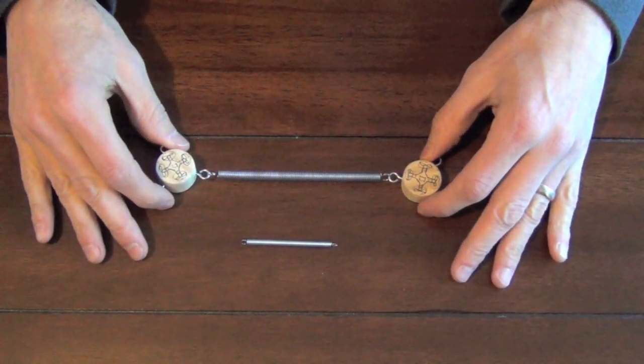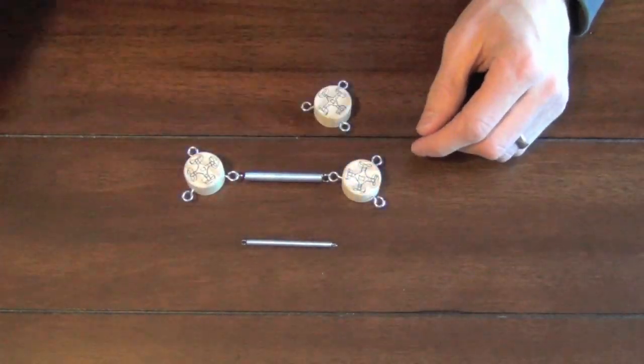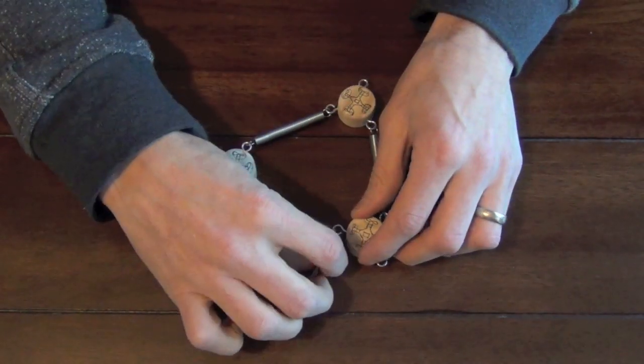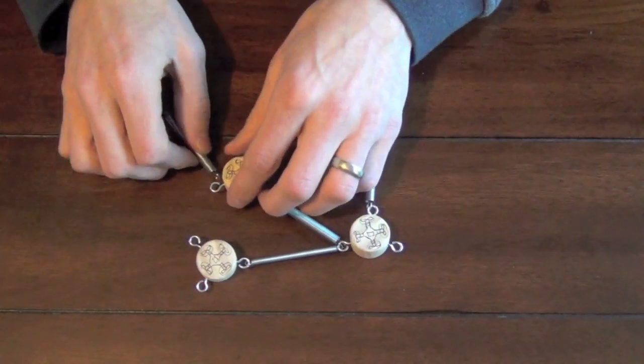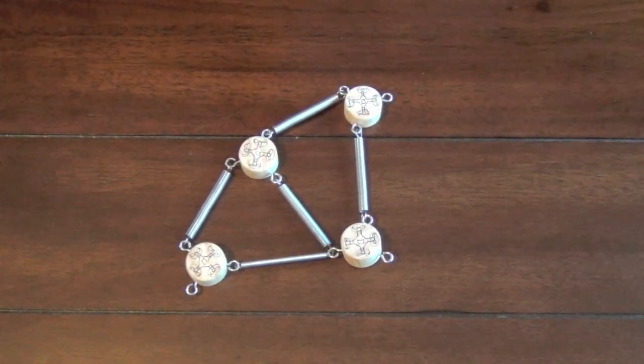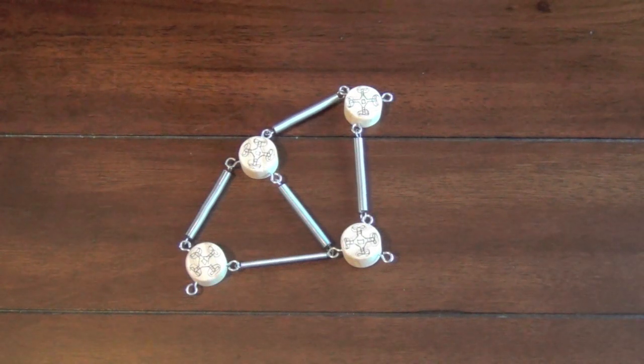The nice thing about a model like this is that it expands very easily to a larger group of robots. We can add more agents with the exact same logic and start to develop shapes and patterns of robotic swarms with very simple underlying rules. Move closer to my neighbor, move further from my neighbor.